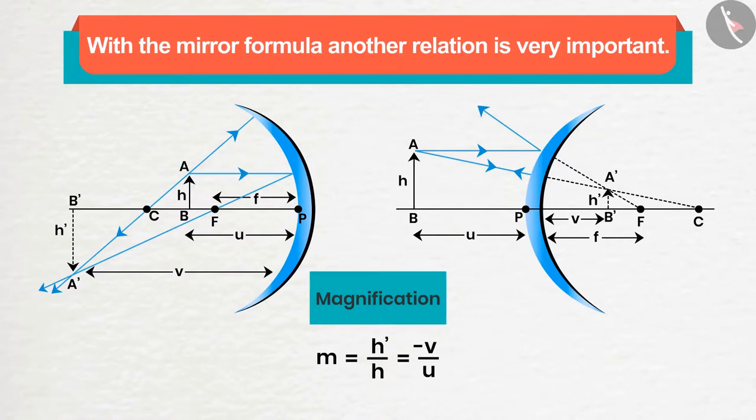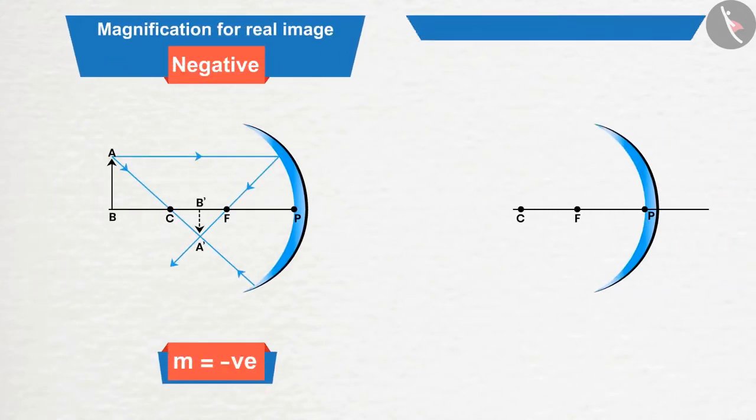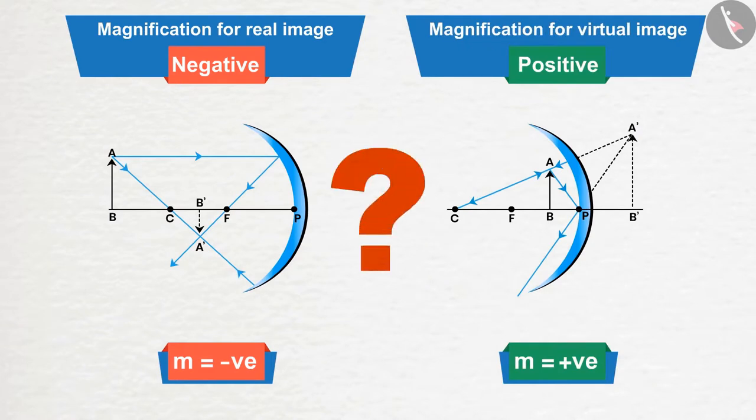You must have read in your books that magnification is negative for a real image, and positive for a virtual image. Why? Have you ever thought of it?